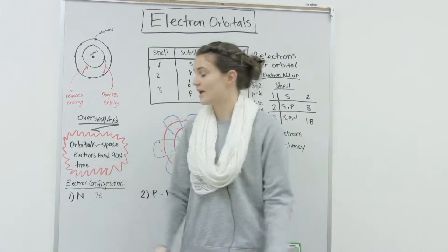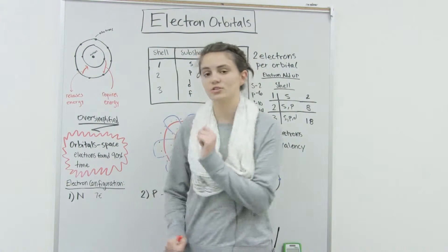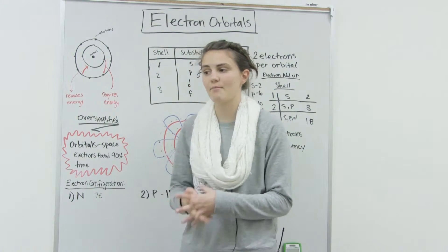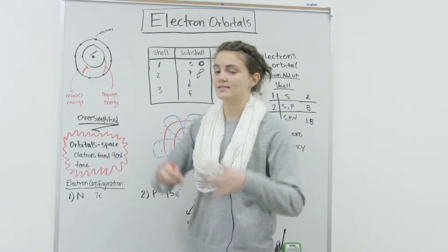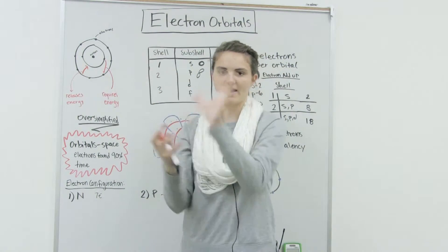And so the reason is because of orbitals. Orbitals are the space that electrons are found in 90% of the time. So they won't always be there, but the majority of the time you find them there, and it's a 3D space. So it's not just linear like a circle. It's all over going back and forth.